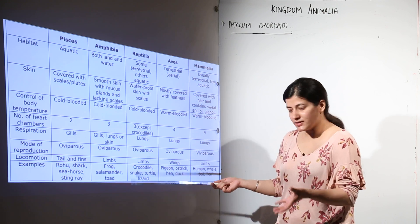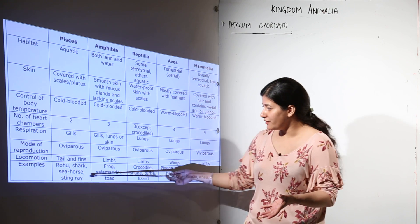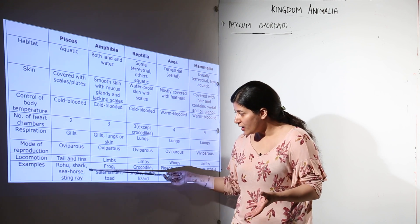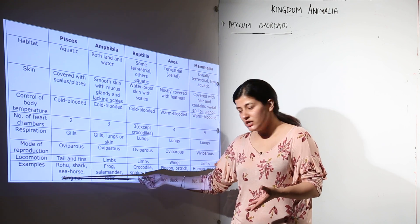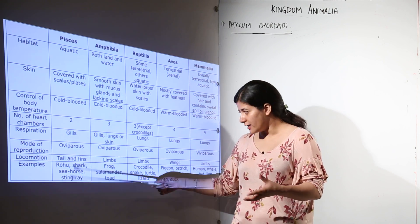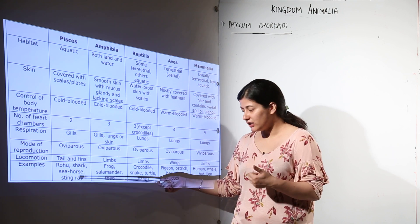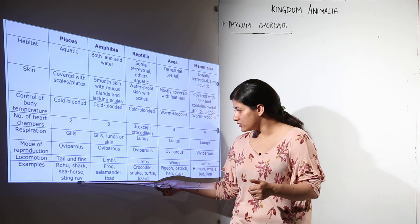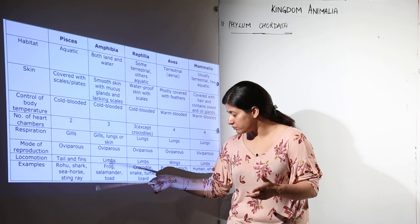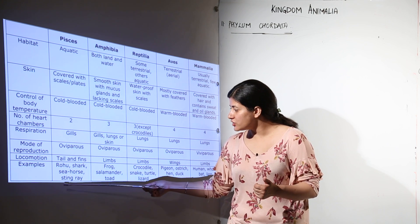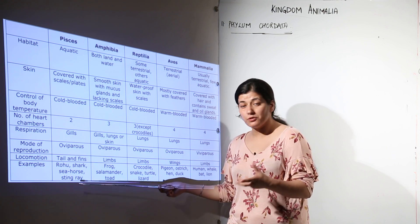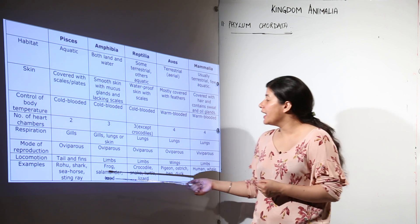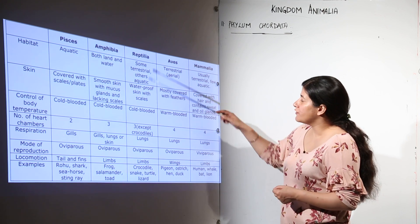We are now well aware of their scientific names as well. Examples include rohu, shark, seahorse — a misleading name but it is still a fish — and the stingray, the poisonous one.